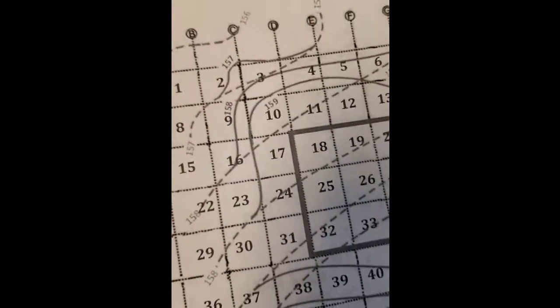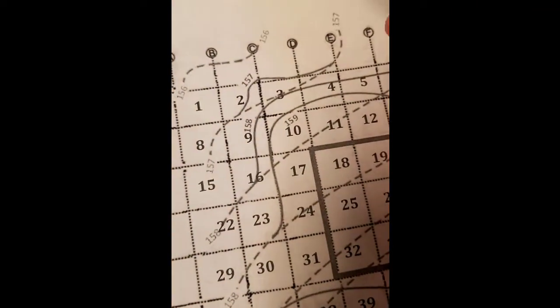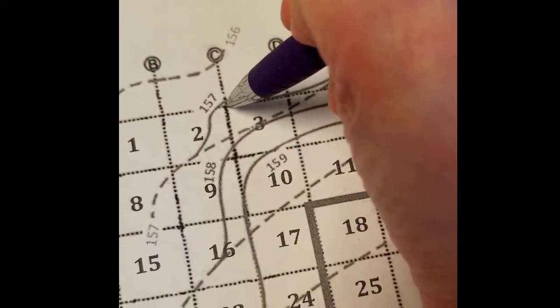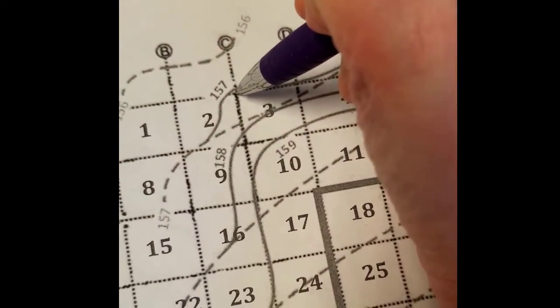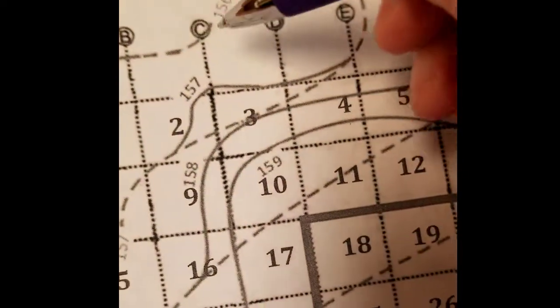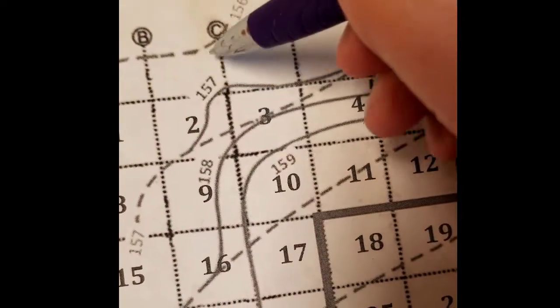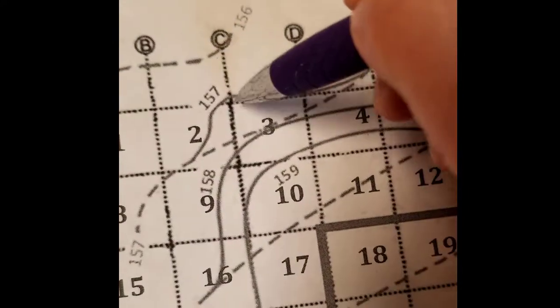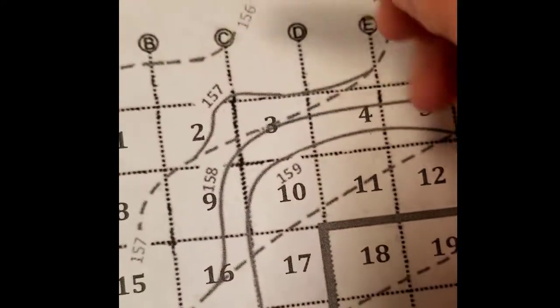All right, so let's take a look at grid number three. So we're looking at this point right here. We need to know what is its current elevation.